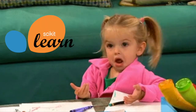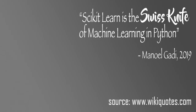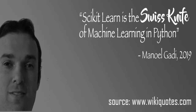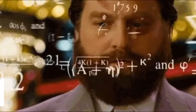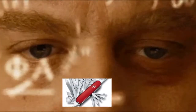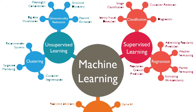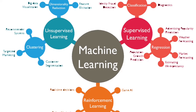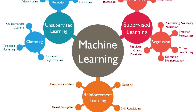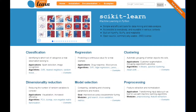So, what is scikit-learn? A wise man once described scikit-learn as the Swiss knife of machine learning in Python. The open source machine learning library provides a wide range of supervised and unsupervised learning algorithms within the Python ecosystem. It is important to note that sklearn is not concerned with the loading, handling, manipulating, and data visualization.